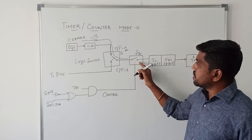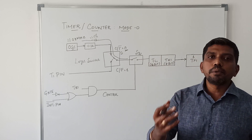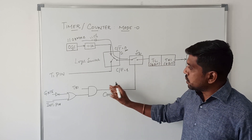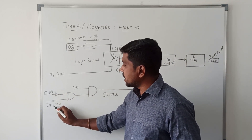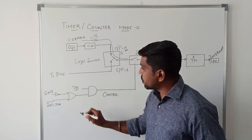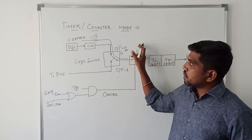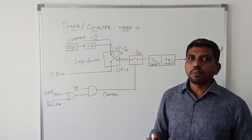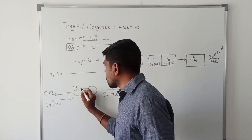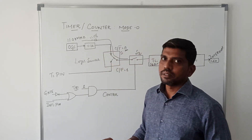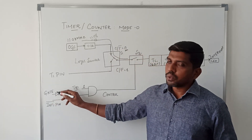Switch S2 is mainly used to determine whether the timer circuit is enabled by software or hardware. Here we are using three input signals: TR1, GATE, and INT1 pin. TR1 represents that the timer block is considered in timer mode. In the 8051 microcontroller we have two timers — Timer 0 and Timer 1 — and in this circuit we consider the Timer 1 block. TR1 value is set to 1, then we go to the next input, GATE.